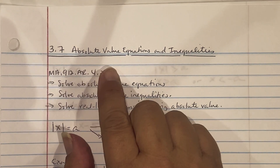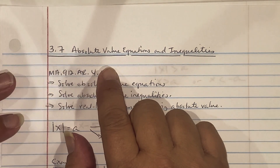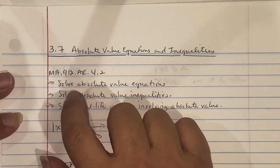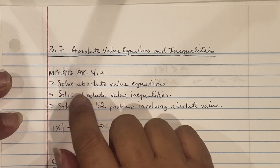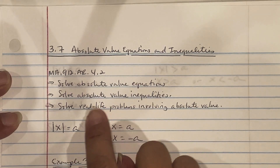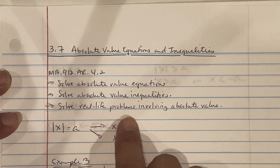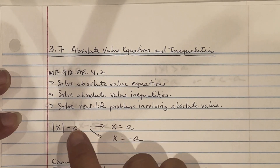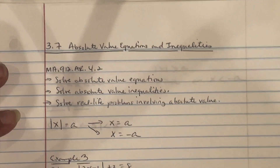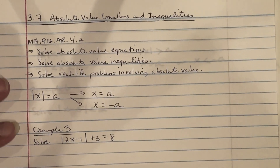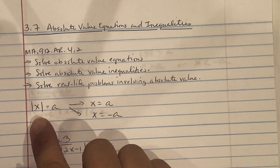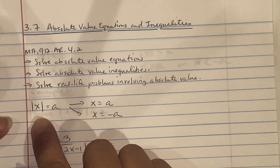3.7 Absolute Value Equations and Inequalities — this is MA.912.AR.4.2. We're going to solve absolute value equations, solve absolute value inequalities, and solve real-life problems involving absolute value. This lesson is piggybacking off module 2 content learned previously in module 3. The only difference is that we're adding absolute values.